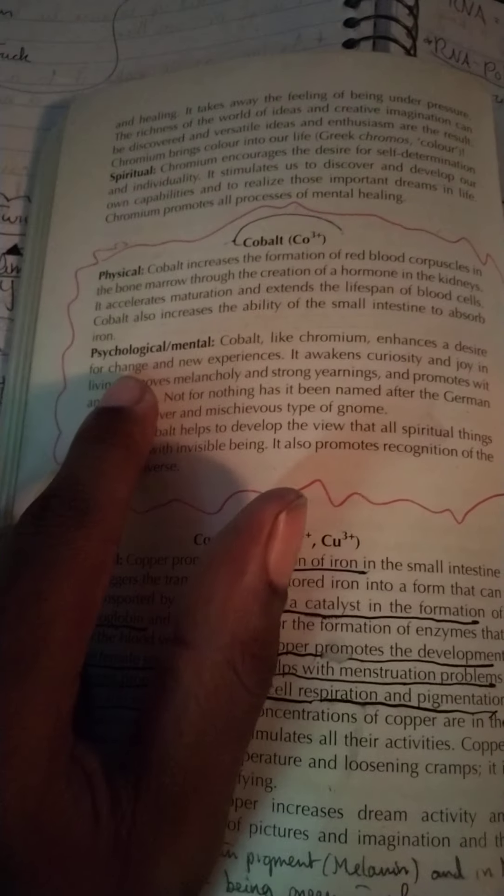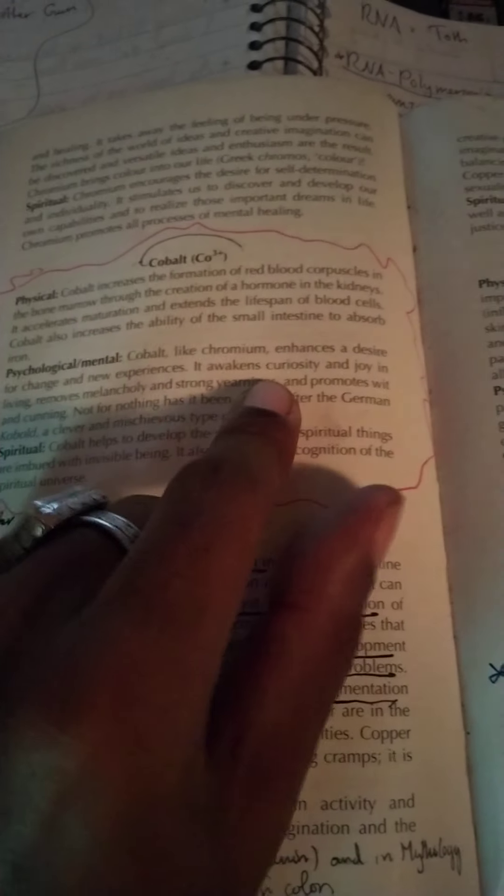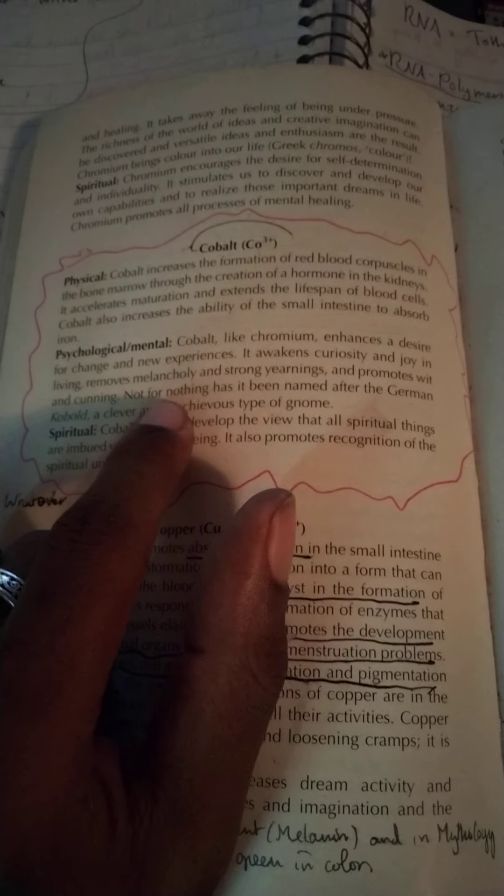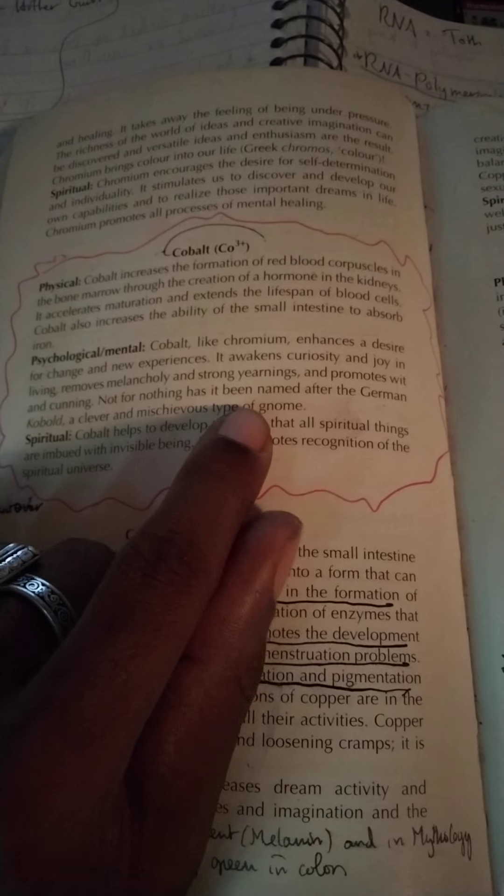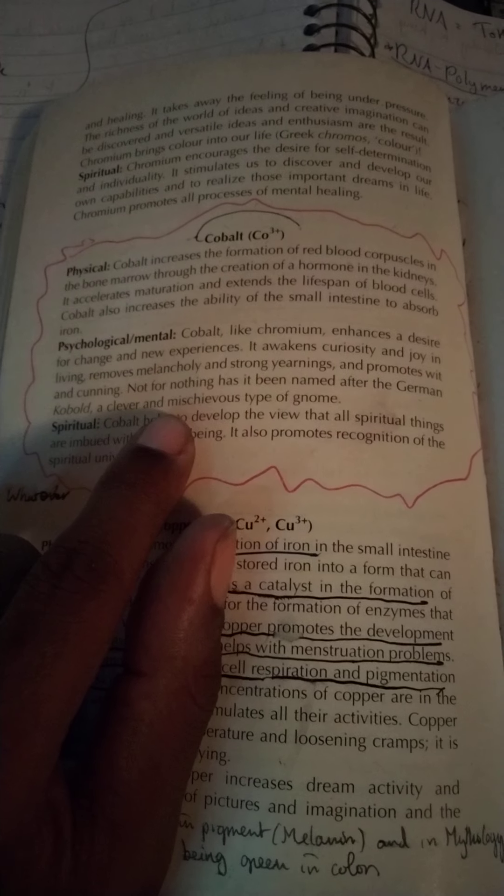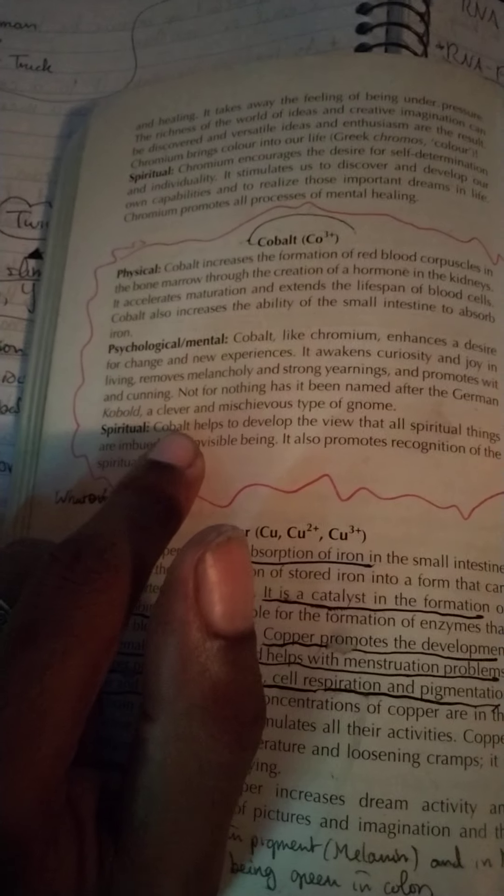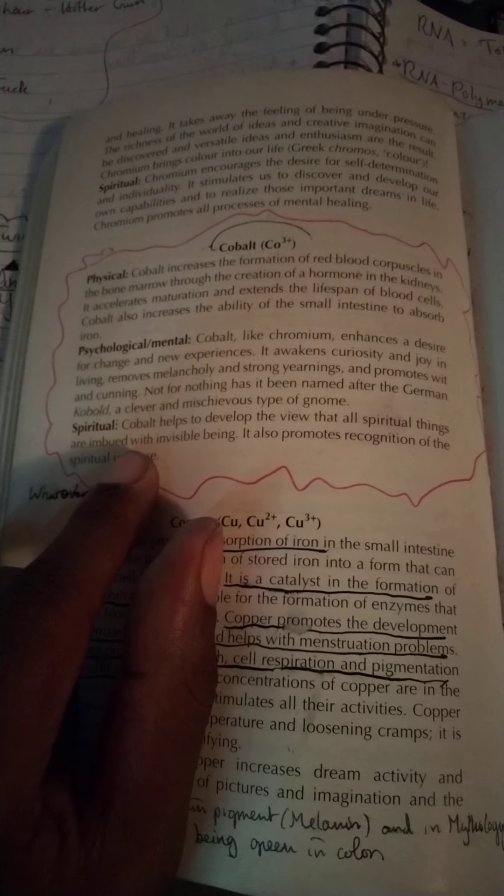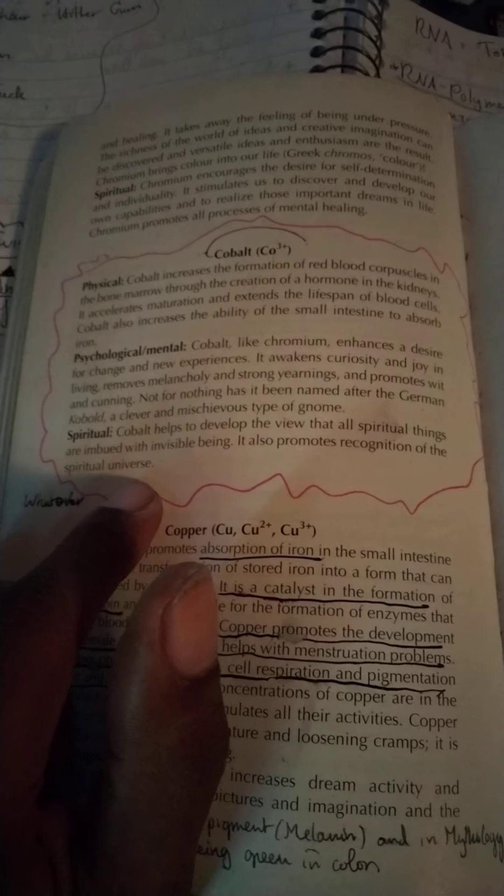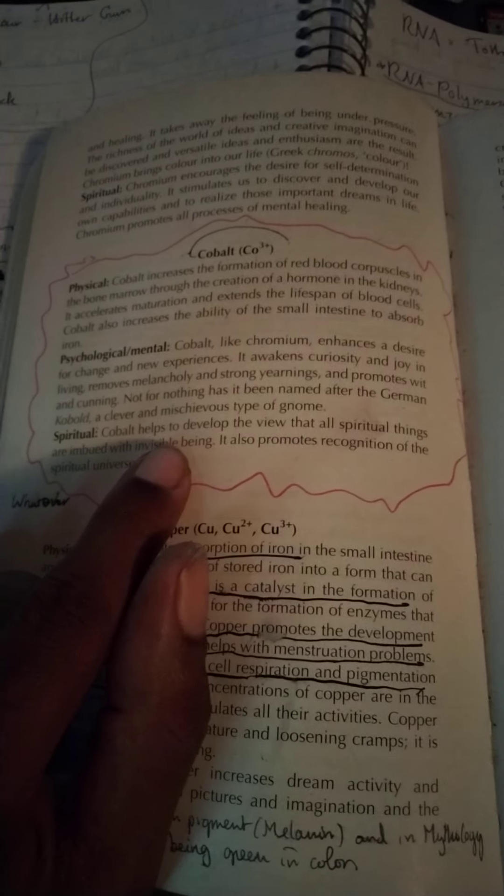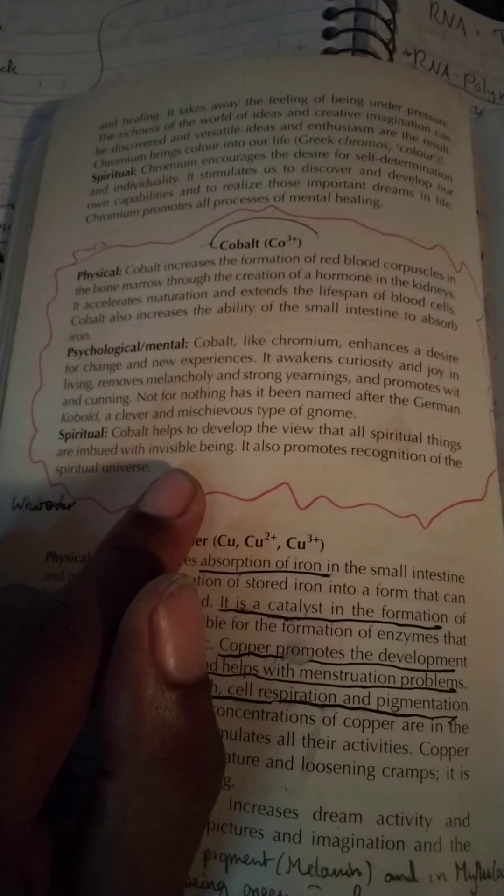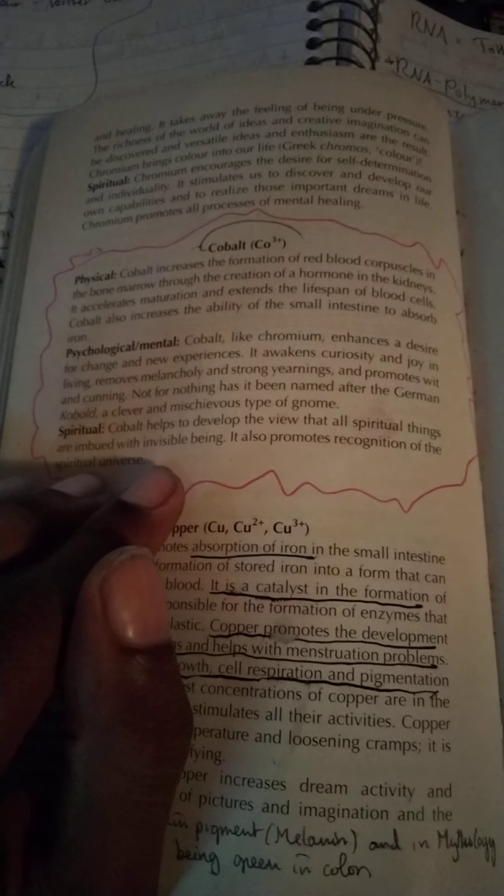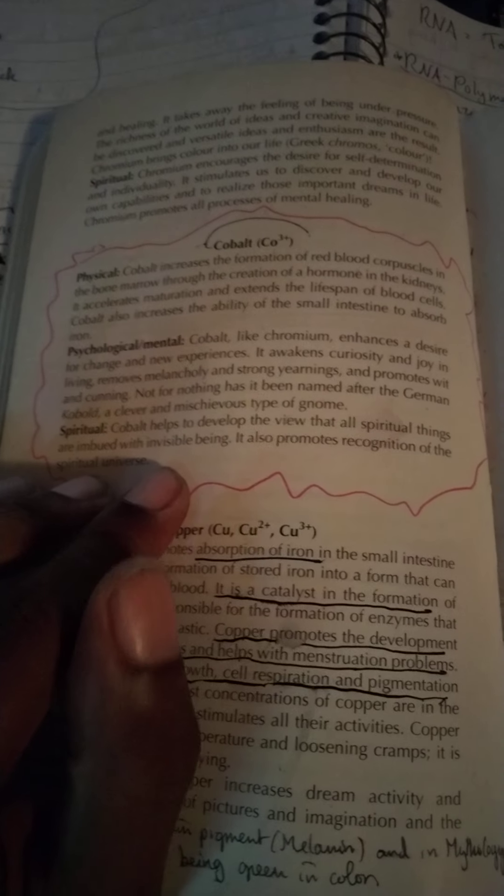No coincidence, Father Time or Saturn are called the Lord of Karma. We talk about reincarnation or releasing karma - in a lot of cases it's connected with our ancestral lineage or our DNA. This story is in our body. Through the bone marrow, through the creation of a hormone in the kidneys, it accelerates maturation and extends the lifespan of blood cells. Cobalt also increased the ability of the small intestines to absorb iron. Cobalt, like chromium, enhances a desire for change and new experiences. It awakens curiosity and joy in living, removes melancholy and strong yearnings, and promotes wit and cunning. Not for nothing has it been named after the German cobalt, a clever and mischievous type of gnome. Cobalt helps to develop the view that all spiritual things are imbued with invisible being. It promotes recognition of the spiritual universe. It's basically saying you really kind of understand the interconnectedness of things, dissolve the duality.